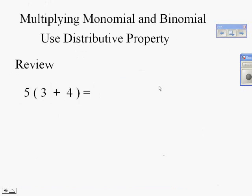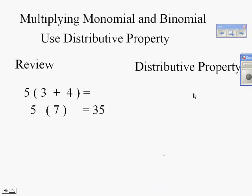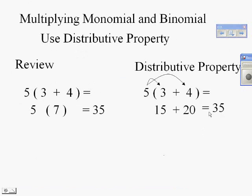We also want to review the distributive property. Let's look at what we would do without it — order of operations: we'd add 3 plus 4 first and get 7, then multiply by 5 and come out with 35. Now using the distributive property: take the 5 out front, multiply by 3 to get 15, then multiply 5 times 4 to get 20, add those together and it gives us 35.